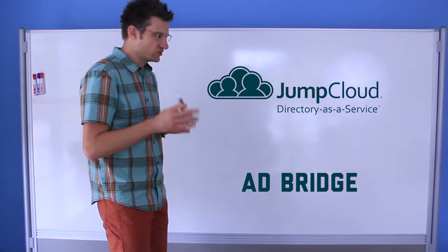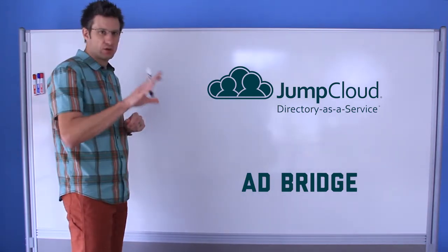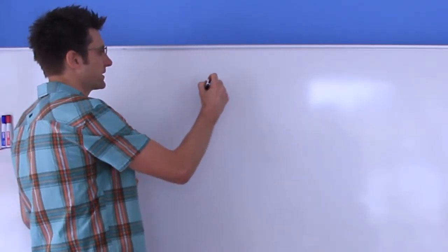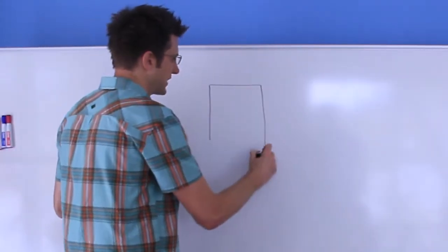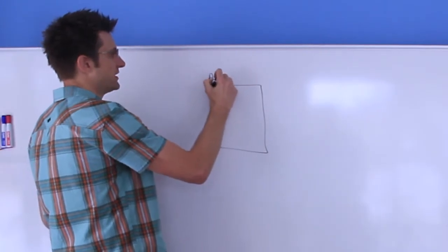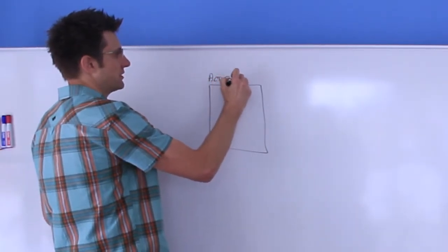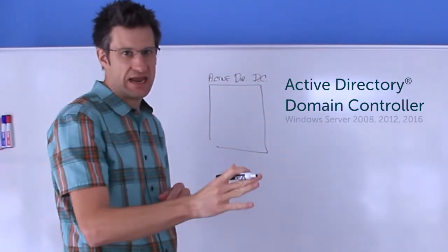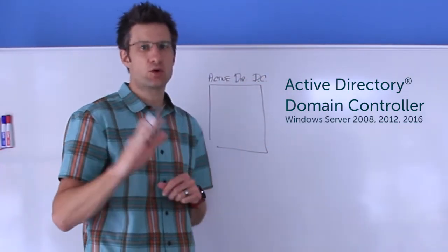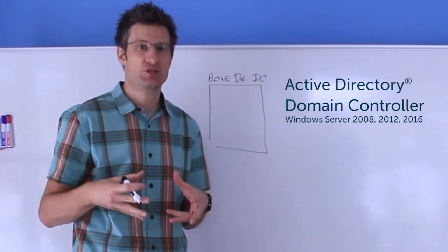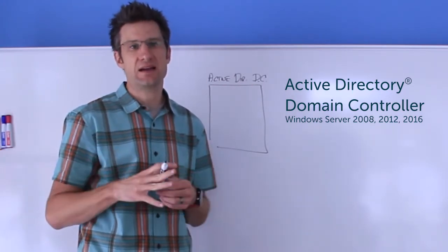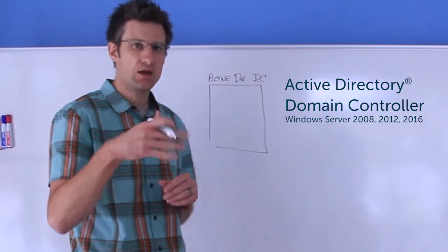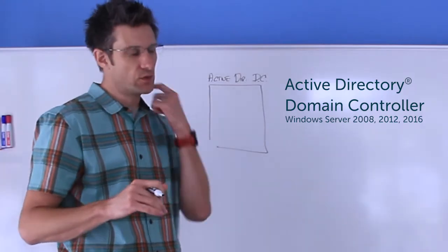So let's draw some boxes and we'll label each so you understand the different components in this transaction. The first is active directory itself, the active directory domain controller. This is the Windows 2008, 2012 or 2016 server upon which you have created the active directory services. So your classic domain controller, and we support all three of those versions of Windows server.